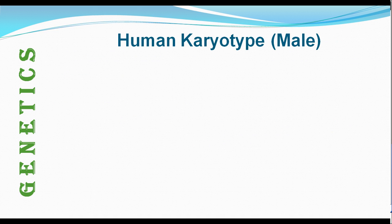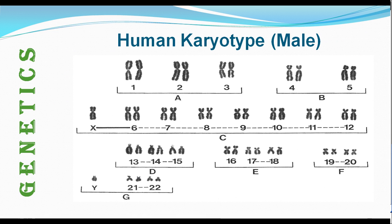Now see the human karyotype of a male. The chromosomes are arranged in 7 groups: A, B, C, D, E, F, and G. In group A, there are 3 pairs — 1, 2, and 3. In group B, 2 chromosomes — 4th and 5th. Group C is the largest group, containing the X chromosome and chromosomes 6 through 12. Group D has 3 pairs, group E has 3 pairs, group F has 2 pairs. In group G, the Y chromosome as well as the 21st and 22nd chromosomes are found. The 22nd chromosome should be the smallest in size.